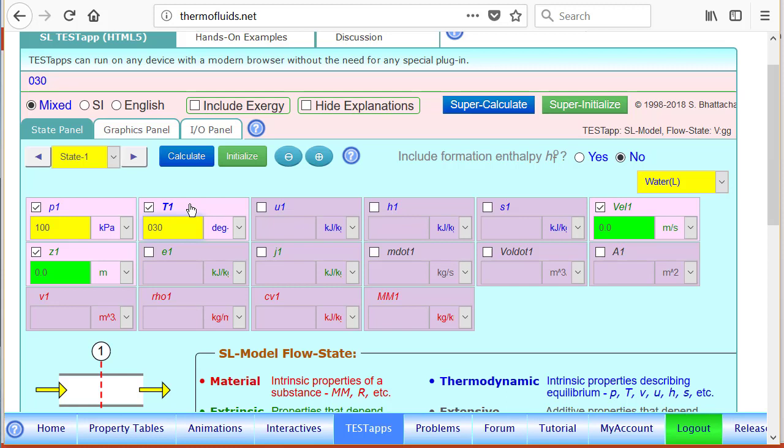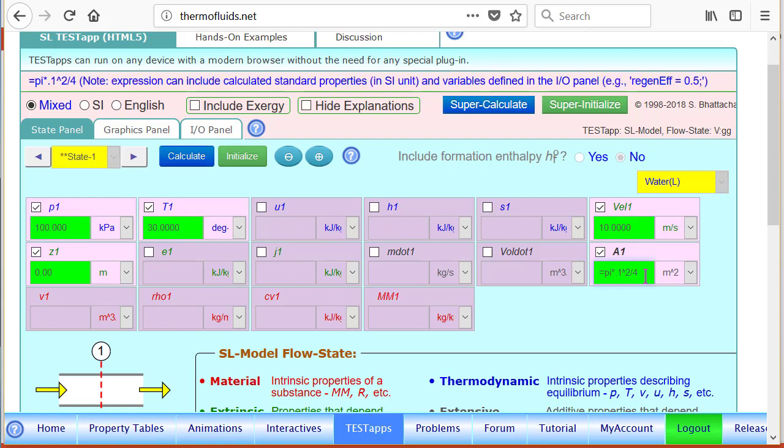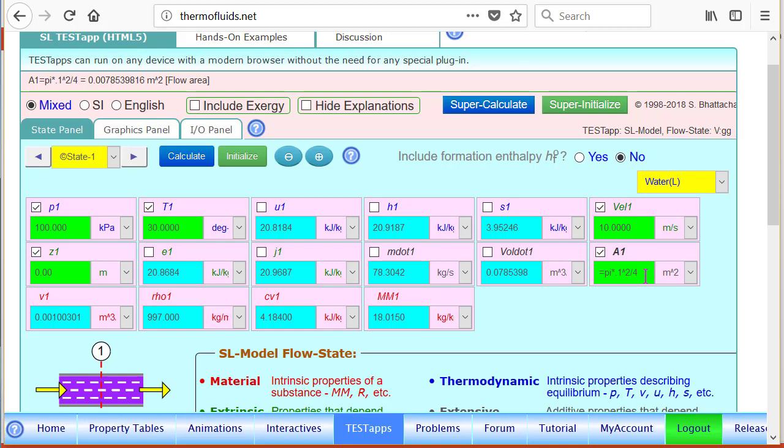And instead of the area, the velocity is also given to us, so let's set that to 10 m per second. Instead of the area being directly given, the diameter is given. So we can write a formula pi d squared by 4 for the area, 0.1 being the diameter in meters, because we have to always use the SI unit.